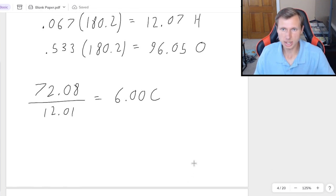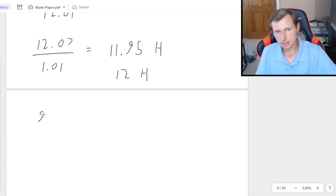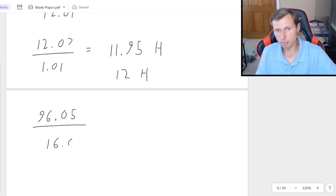Then doing the same thing for hydrogen. That was 12.07 divided by its molar mass, 1.01. That'll be 11.95, which I'm going to round to 12 like I just said I would. And then for oxygen, 96.05 divided by 16.00. That'll get me 6.00 for oxygen.